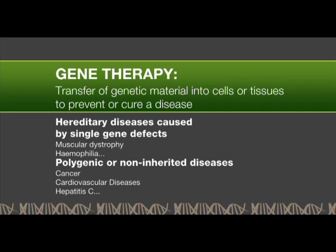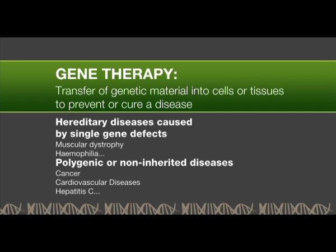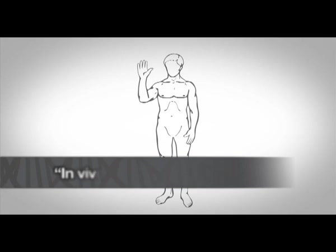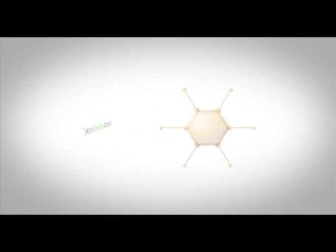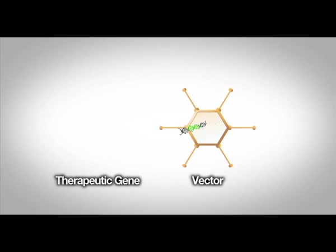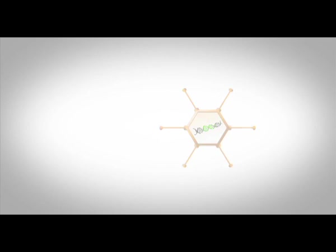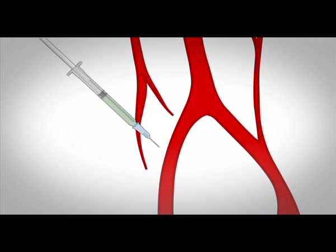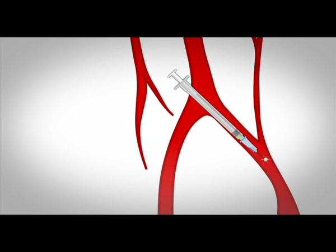We can distinguish two types of approaches in gene therapy. In vivo gene therapy is based on the introduction of a therapeutic gene into a vector which is then administered directly to the patient. This vector will transfer the gene of interest in the target tissue to produce the therapeutic protein.